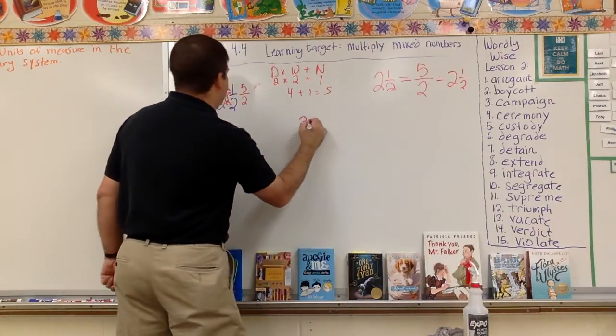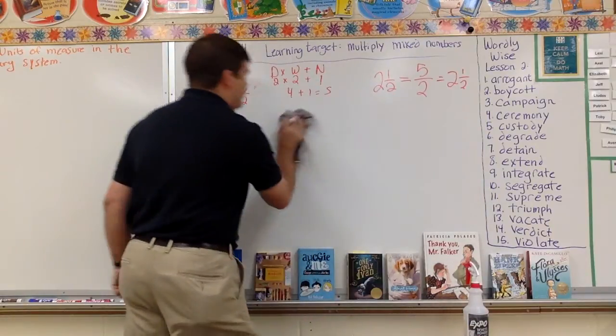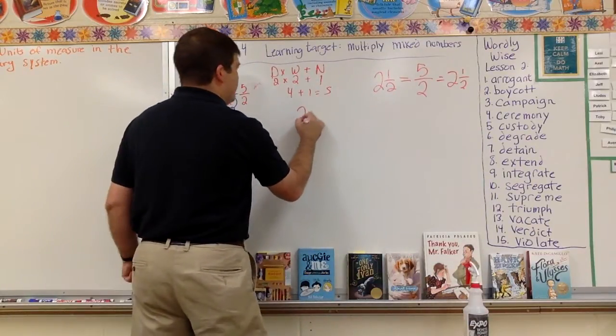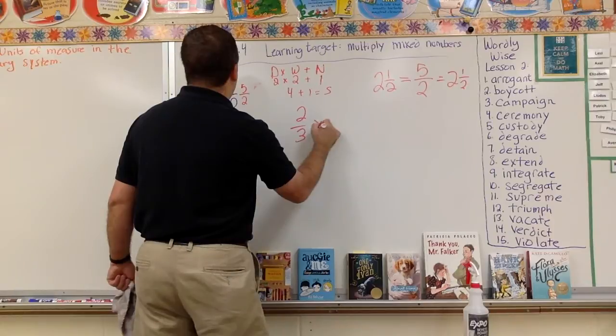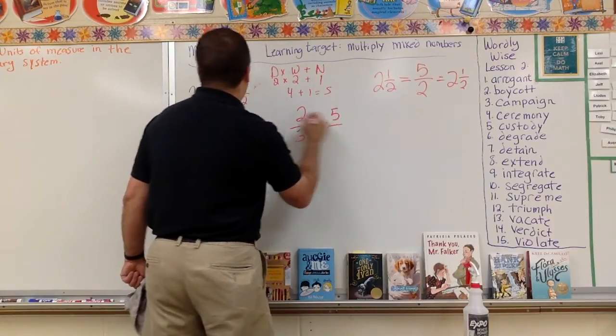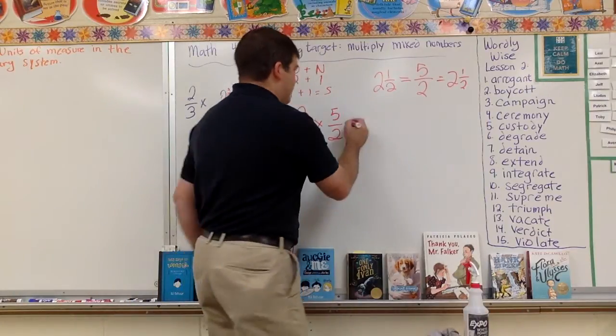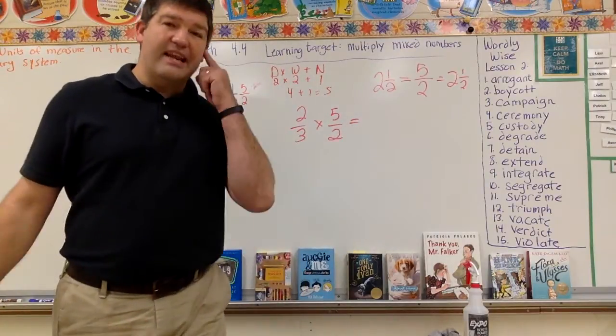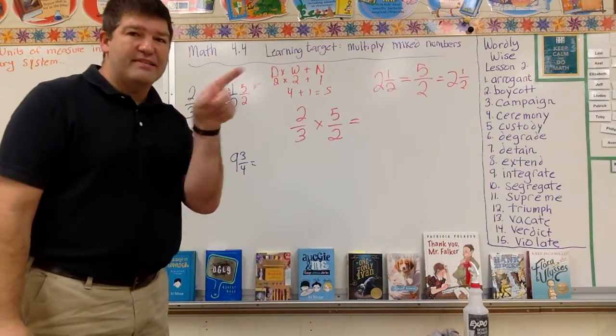Now I have two thirds times five halves. I'm looking at this and I see a cross simplifying.